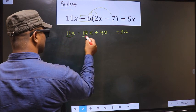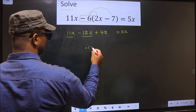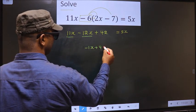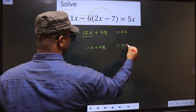Now, 11x minus 12x is minus 1x plus 42 equal to 5x.